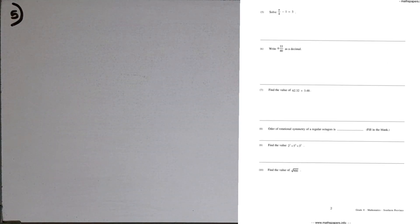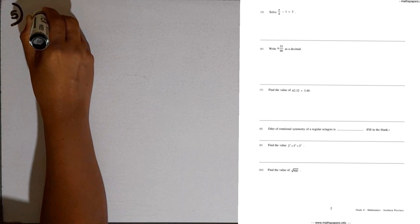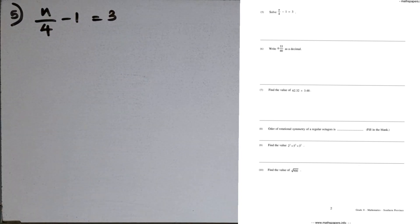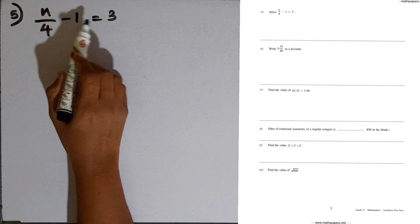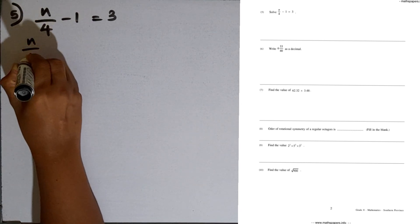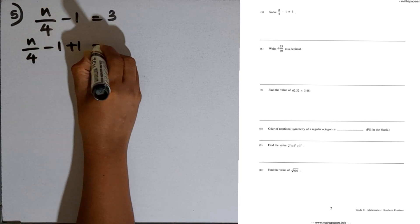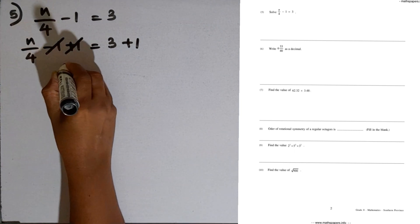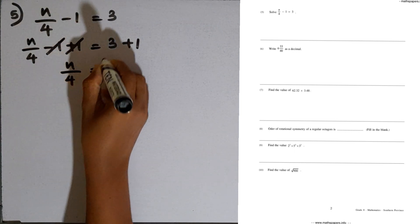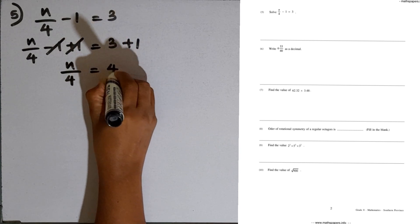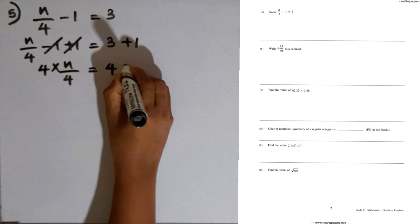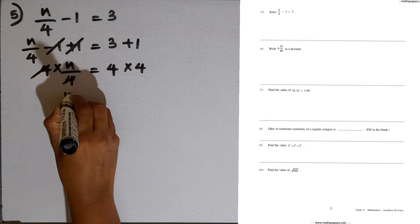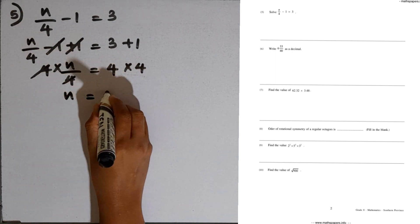Question number 5: solve the simple equation N over 4 minus 1 equals 3. As the first step, add 1 to both sides to remove the minus 1. So N over 4 minus 1 plus 1 equals 3 plus 1. The minus 1 and plus 1 cancel, leaving N over 4 equals 4. Now multiply both sides by 4. The 4s cancel, giving N equals 4 times 4, which is 16.